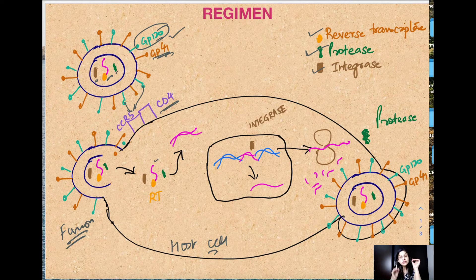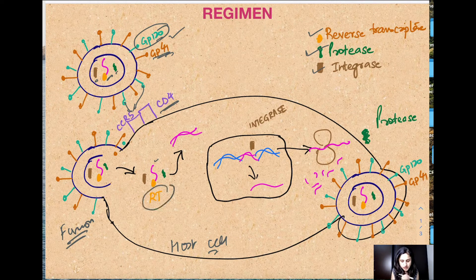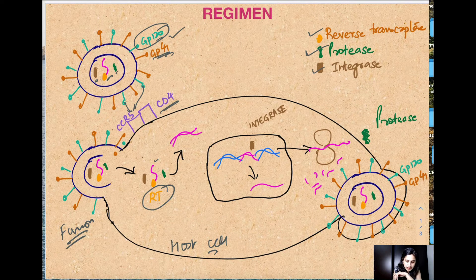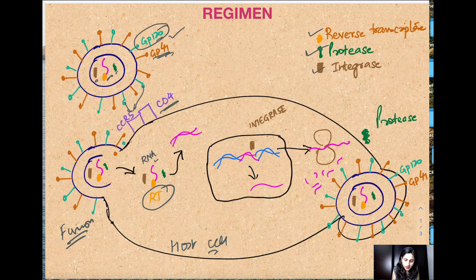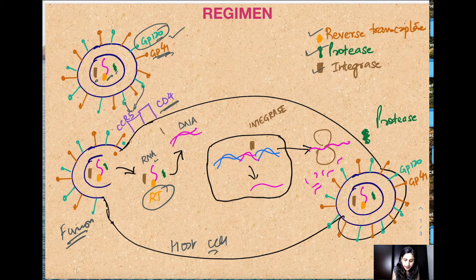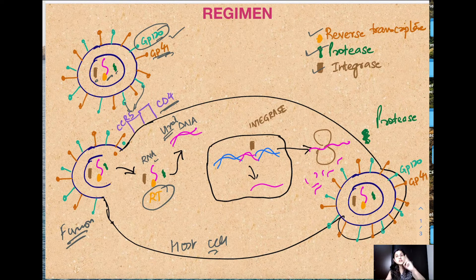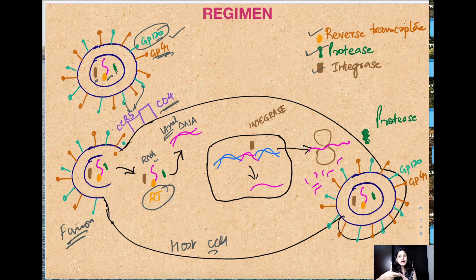Now the interesting point here which is different from normal RNA viruses is this reverse transcriptase enzyme. Here the pink one, this single strand is your RNA. Reverse transcriptase will convert this RNA to double stranded DNA, but this is viral DNA.